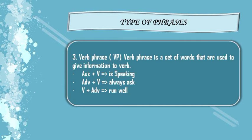The third is verb phrase, usually called VP. The keywords of VP are: auxiliary plus verb — for example, 'is speaking,' where 'is' is auxiliary and 'speaking' is a verb; adverb plus verb — for example, 'always ask,' where 'always' is adverb and 'ask' is a verb; and verb plus adverb — for example, 'run well,' where 'run' is a verb and 'well' is an adverb. So, a verb phrase is a set of words used to give information about a verb.